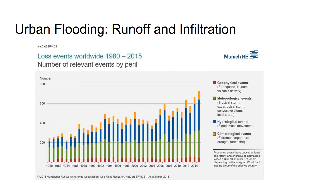As seen in the graph, other major natural disasters stay fairly constant in occurrence, but hydrological and storm events have been constantly increasing because of urbanization.